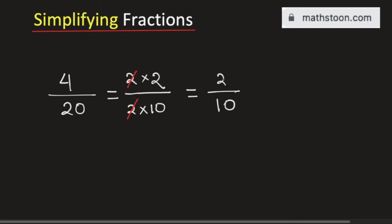Now, again look that both 2 and 10 are divisible by 2. So, we can divide them by 2. And by doing so, we get 1 divided by 5.